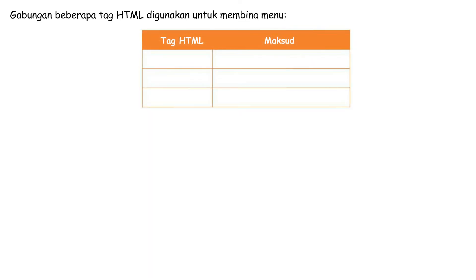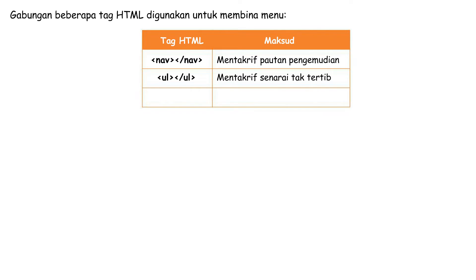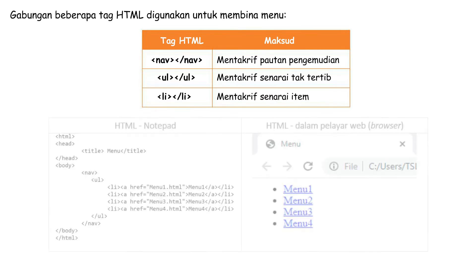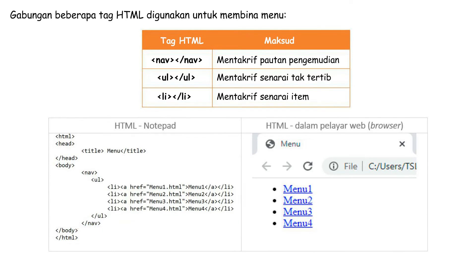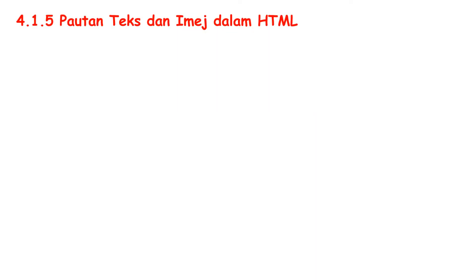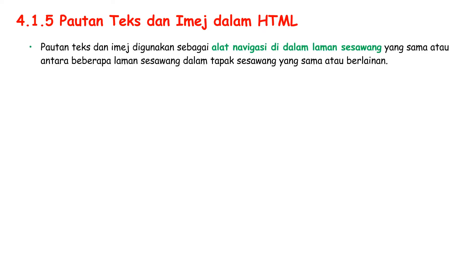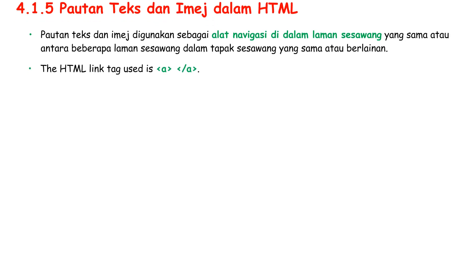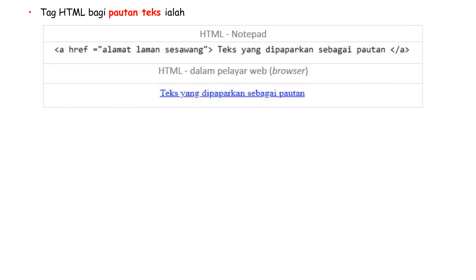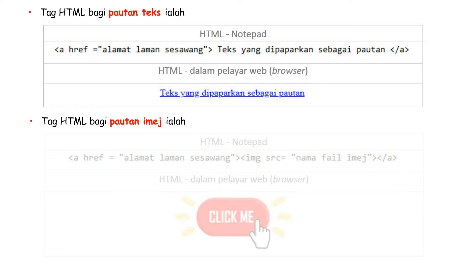To define a navigation link, define an unordered list, and define a list of items. Define text and image is used as a navigation tool within the same Tapak Sesawang or between several Tapak Sesawang. The HTML tag used is the anchor tag A. The HTML code for a text hyperlink and for an image hyperlink are shown here.